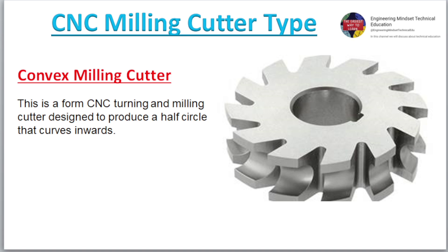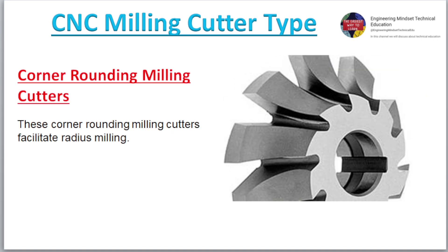Convex Milling Cutter. This is a form turning and milling cutter designed to produce a half circle that curves inwards. Corner Rounding Milling Cutters. These corner rounding milling cutters facilitate radius milling.